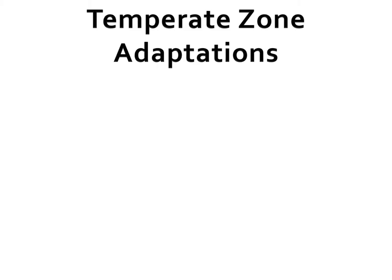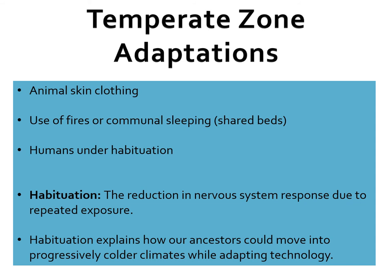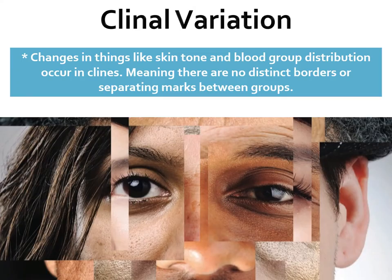Now that we've talked about human adaptations in terms of diet and physiological adaptations for heat and cold, let's look at temperate zone adaptations — perhaps our most cultural, in terms of animal skin and clothing, the use of fires or communal sleeping beds to maintain heat. We have habituation — the reduction in nervous system response due to repeated exposure. Habituation explains how our ancestors could move into progressively colder climates while developing adapting technology at the same time. As we move through the semester, we're going to start looking at all of these physiological traits within humans that vary slightly between populations but function quite the same.